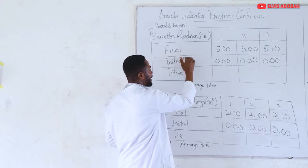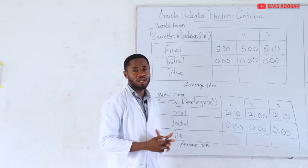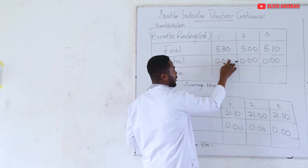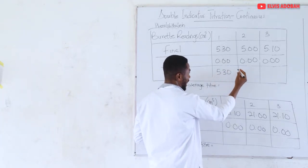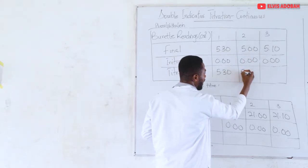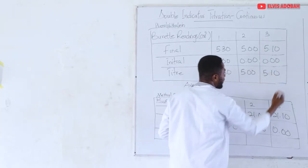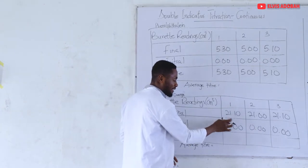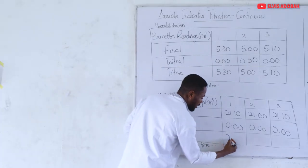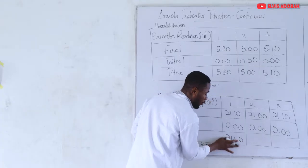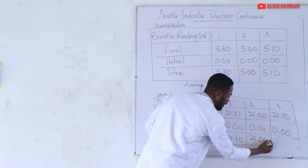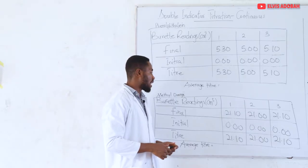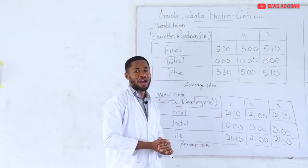The difference between the final and initial titre values gives us our titre. So 5.30 minus 0.00 gives 5.30; 5.00 minus 0.00 gives 5.00; and the third gives 5.10. For the methyl orange titration, final minus initial gives us: 21.10, 21.00, and 21.10.